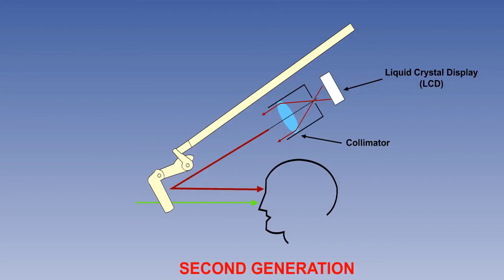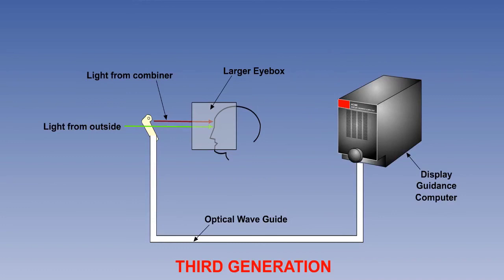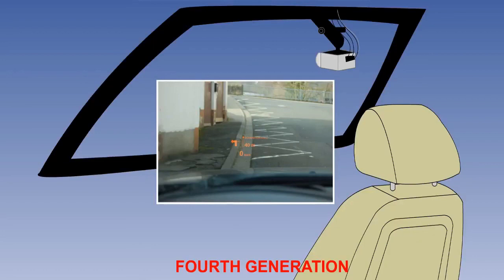Third-generation systems remove the need for the overhead projector. Optical waveguides produce the image directly in the combiner. With these systems, eye reference point is less critical since the eye box is larger. These are just emerging in aircraft. Fourth-generation systems dispense with the combiner altogether. The entire windscreen is used as a transparent display.